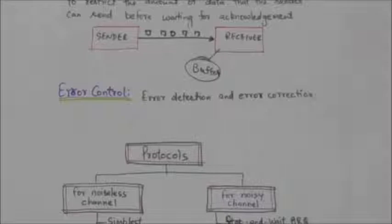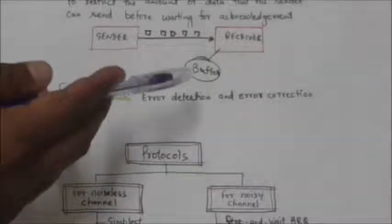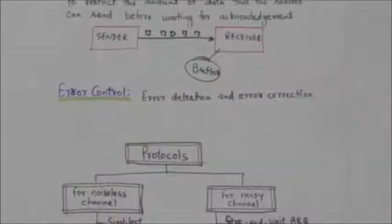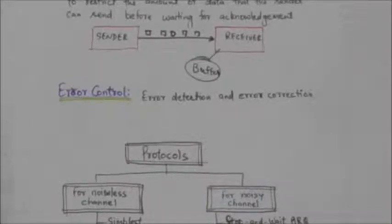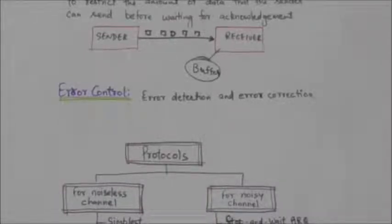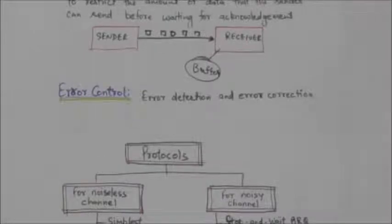Error control is both error detection and error correction. It allows the receiver to inform the sender of any frame lost or damaged in transmission, and coordinates the retransmission of those frames by the sender.